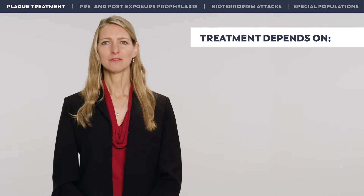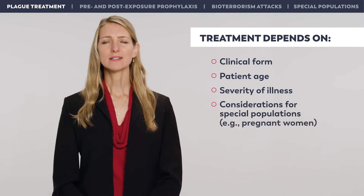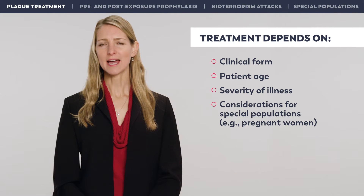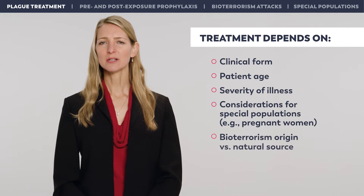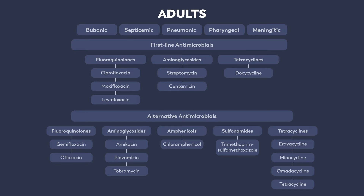Treatment of plague depends on several factors, including clinical form, patient age, severity of illness, considerations such as pregnancy status, and whether the illness originates from a suspected bioterrorism attack or a naturally occurring source. The list shown here provides an overview of the recommended first-line antimicrobials for treatment of plague in patients 18 years of age or older, as well as alternative treatments if the first-line therapies are contraindicated or unavailable.